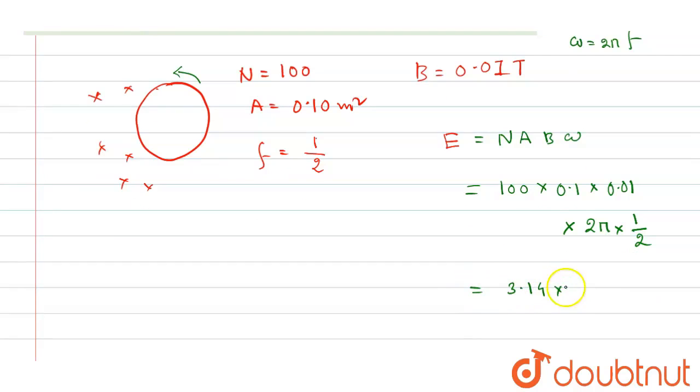3.14 multiplied by 100 multiplied by 0.1 multiplied by 0.01, so it will be...